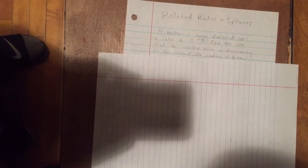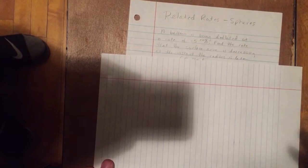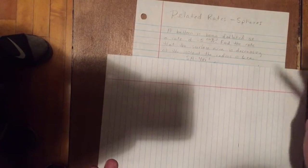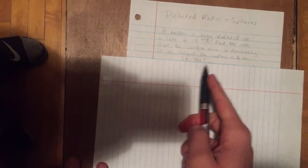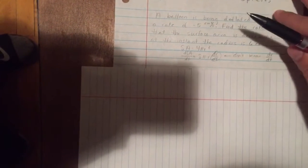So if we're trying to find the change in the surface area, we're going to have to take the derivative of the surface area formula of a sphere, which is 4πr². Now when we take the derivative of that, we get dSA/dt is equal to 8πr dr/dt. Now we have a problem here because we don't know what dr/dt is, so we're going to have to use the volume formula to figure that out.